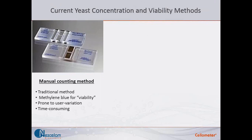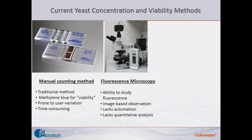The hemocytometer is a manual counting method with about two centuries of history. Currently we use methylene blue for viability to measure the concentration and viability of yeast for each sample. However, this method is prone to user variation — it can be very different from user to user — and if you count many cells, it can be very time consuming.